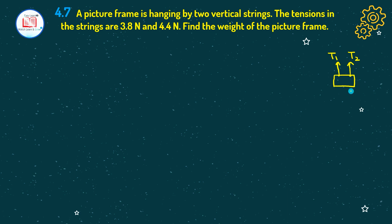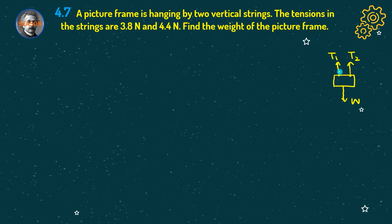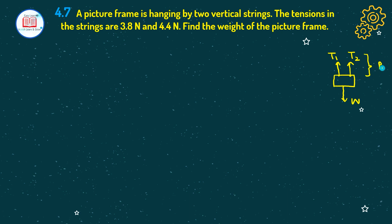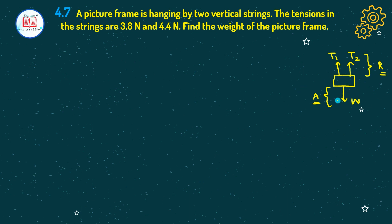The weight of the picture acts downward and we represent it with W. Weight is due to gravity so it acts downward. To balance the two tension forces they act upward. These two tension forces are equal to W in magnitude because action and reaction are equal in magnitude but opposite in direction. When we hang the picture it is in equilibrium, so the two tension forces balance the weight.